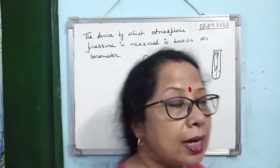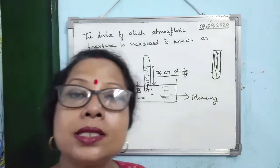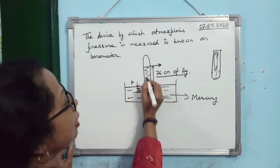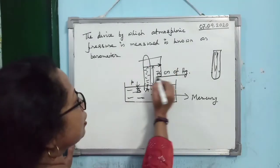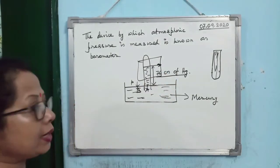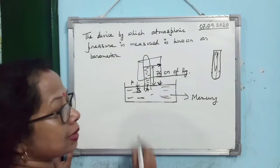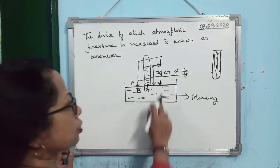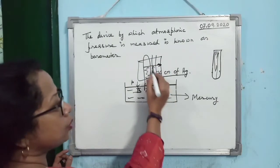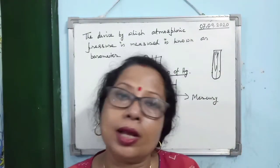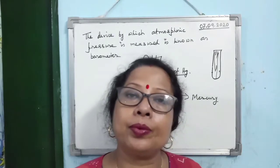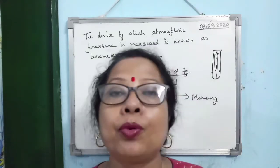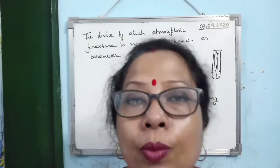In the Fortin barometer, the entire assembly is kept in a closed system with a window through which you can see the upper mercury level in the test tube. There is a pivoted point — if it doesn't touch the mercury surface in the container, you can adjust it with a screw. A scale and handle are attached, and the whole thing is kept in a plastic enclosure, making it easily portable.